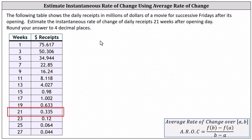To make an estimate for the instantaneous rate of change at week 21, we'll determine the average rates of change from week 19 to week 21, as well as week 21 to 23, and then we'll average these average rates of change for our estimate of the instantaneous rate of change at week 21.